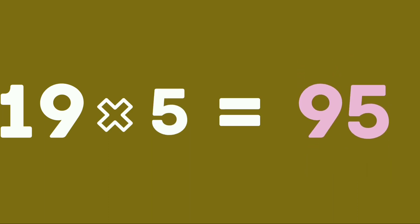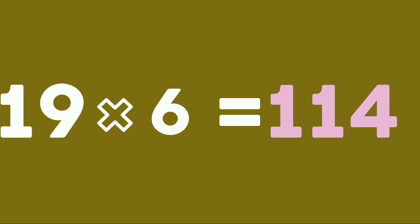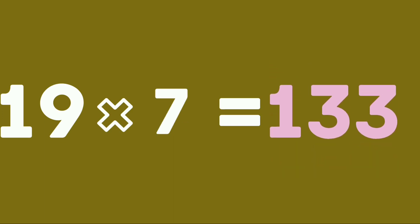Nineteen fives are ninety-five. Nineteen fives are ninety-five. Nineteen sixes are one hundred fourteen. Nineteen sixes are one hundred fourteen.